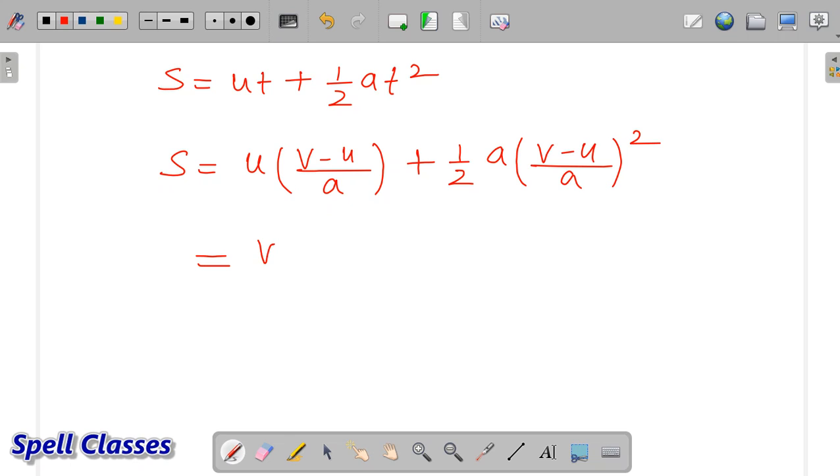Multiply this inside: vu minus u square by a. Half a - we need to open the whole square. A minus b whole square equals a square plus b square minus 2ab.